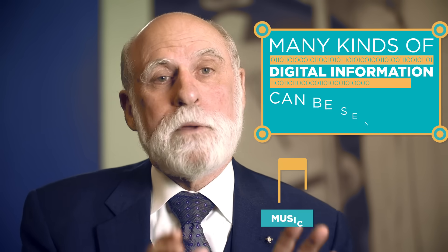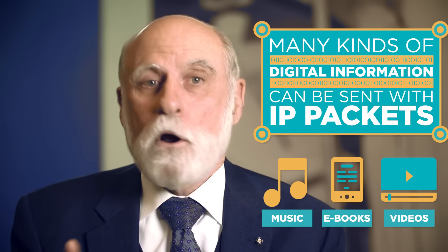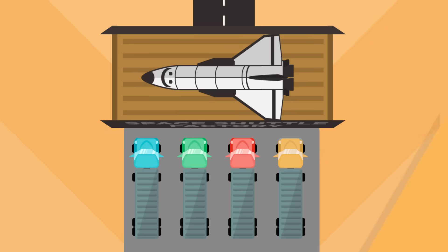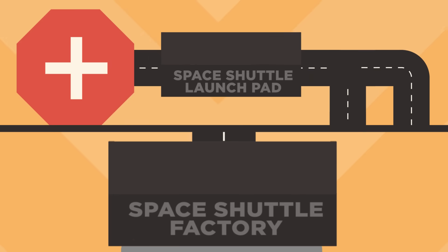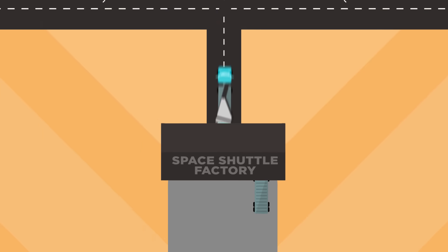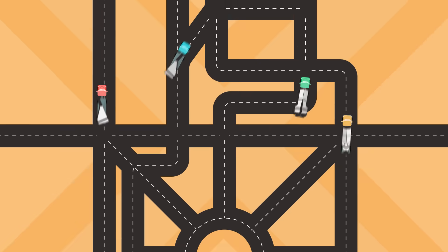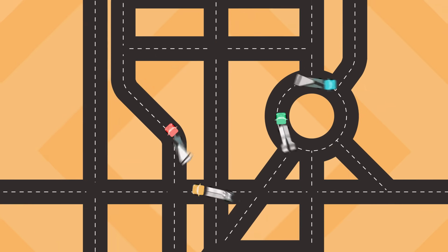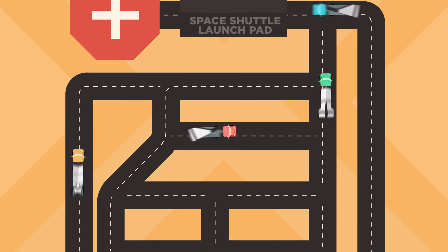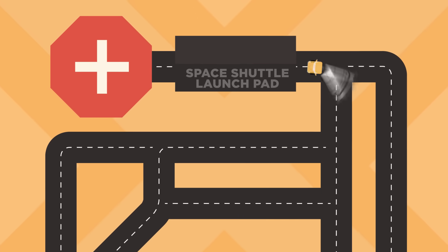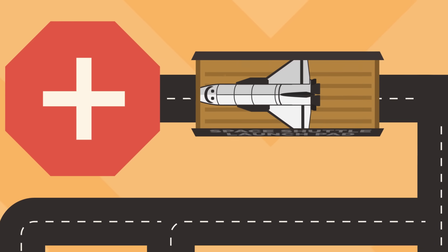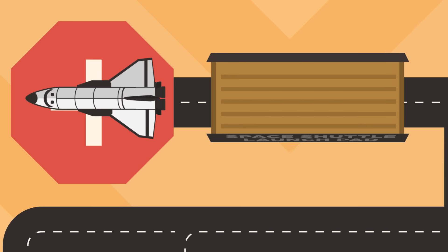Just as you can transport all sorts of stuff inside a car, many kinds of digital information can be sent with IP packets, but there are some limits. What if, for example, you need to move a space shuttle from where it was built to where it will be launched? The shuttle won't fit in one truck, so it needs to be broken down into pieces and transported using a fleet of trucks. They could all take different routes and might get to the destination at different times, but once all the pieces are there, you can reassemble them into the complete shuttle and it'll be ready for launch.